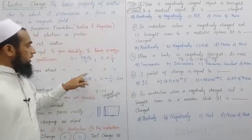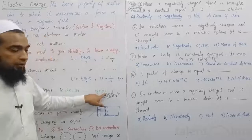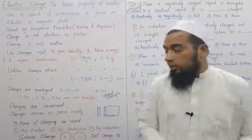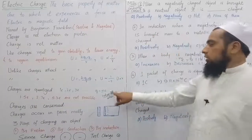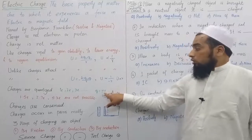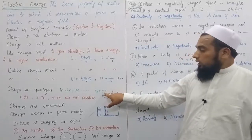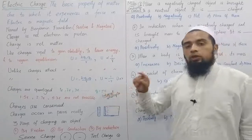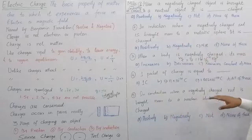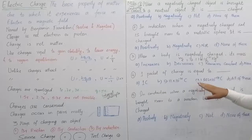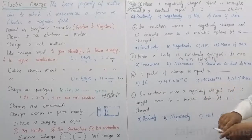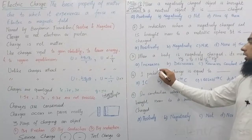One packet of charge equals e — the charge on an elementary particle, either an electron or a proton — which is 1.602 × 10⁻¹⁹ coulombs.